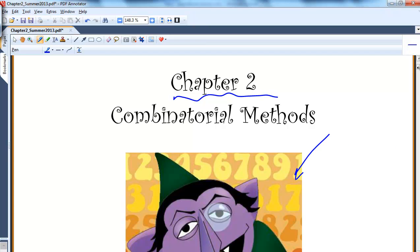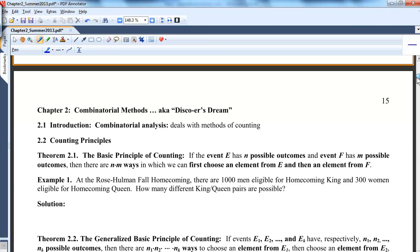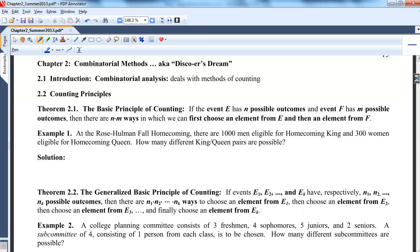Chapter 2, Combinatorial Methods, I call it a Discrete's Dream, or it could be a nightmare, depending on how you like that course. Combinatorial analysis is just methods of counting. So that's all 2.1 really says.